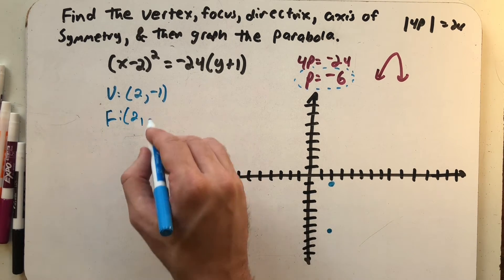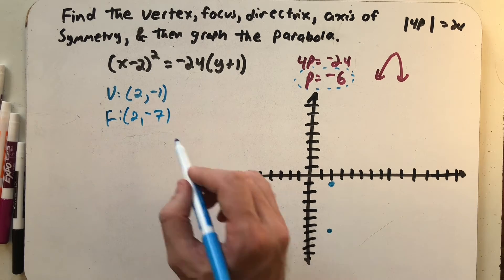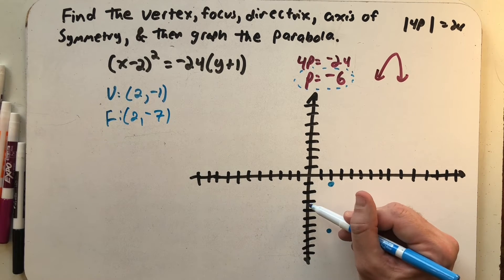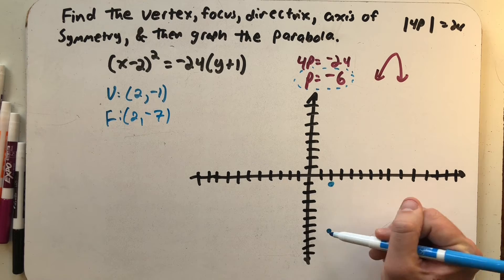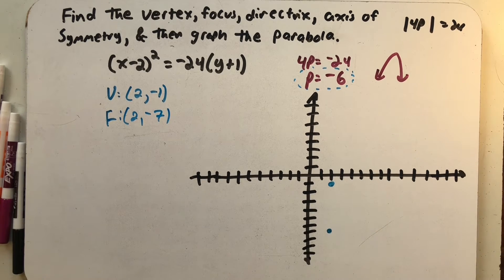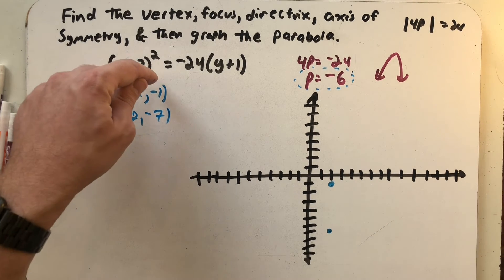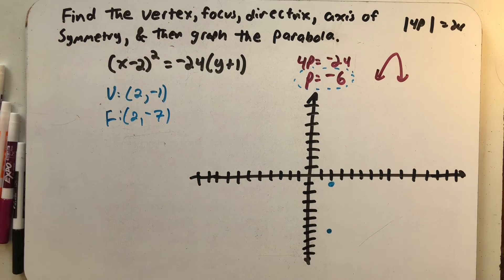I go 6 units below that y value, so that's down there at -7. And that reminds me that our rule is that we take the y component of the vertex and add p. -1 plus -6 is -7. So even if I was thinking formulaically, I'll get the same thing.